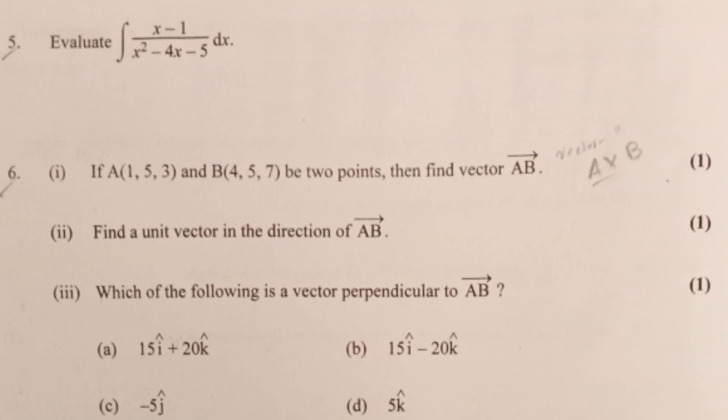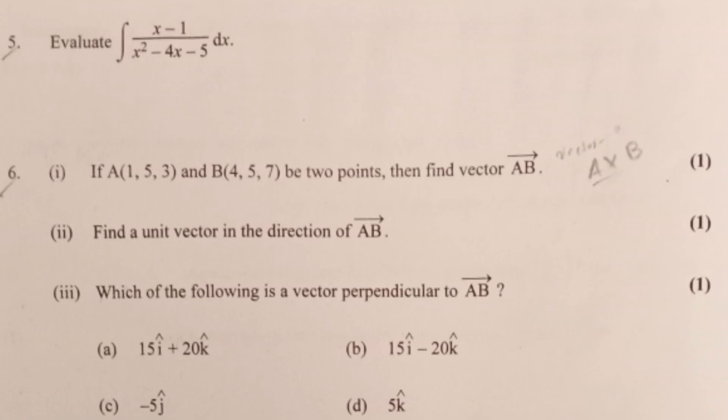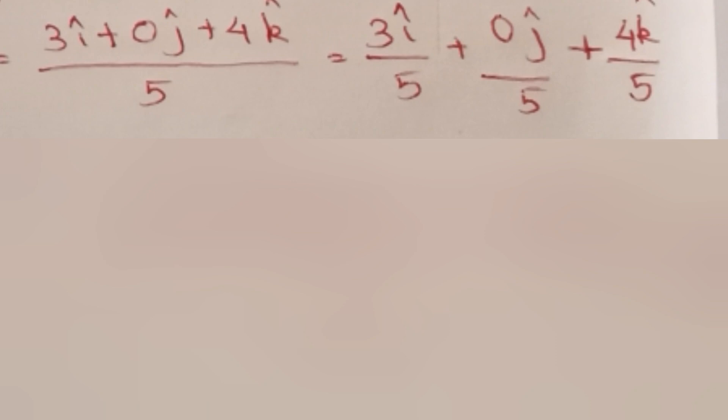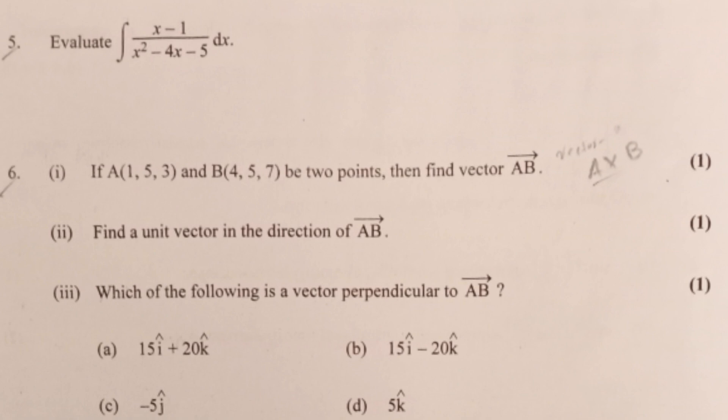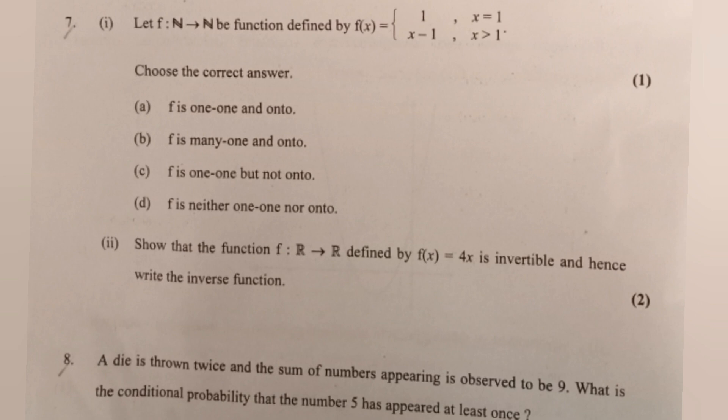If A = (1, 5, 3) and B = (4, 5, 7) are two points, find vector AB. Answer: Vector AB equals 3i + 0j + 4k. To find a unit vector in the direction of AB: unit vector equals AB divided by the magnitude of AB, which equals (3i + 0j + 4k) divided by 5, giving 3i/5 + 0j/5 + 4k/5. A vector perpendicular to AB is option C: minus 5j.